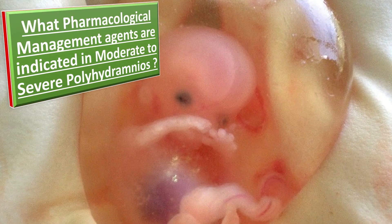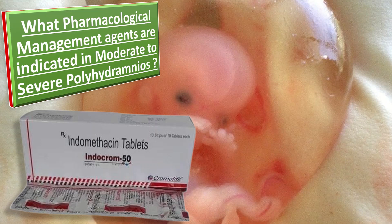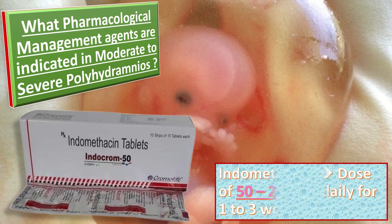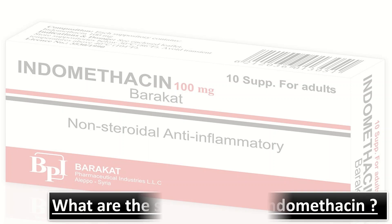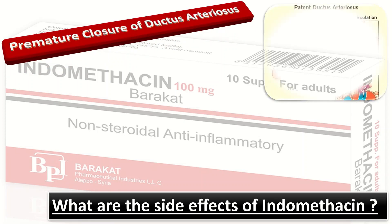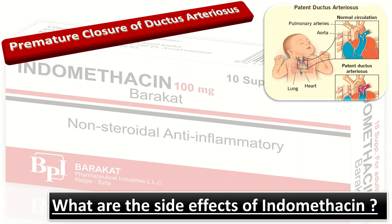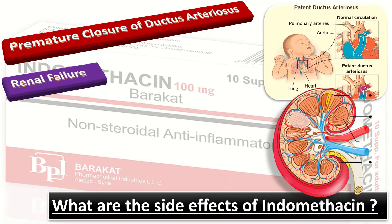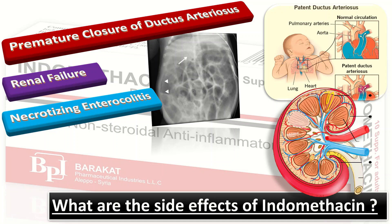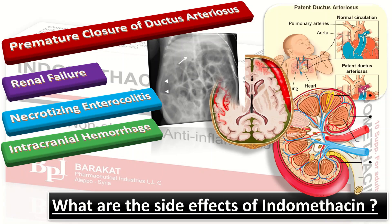What pharmacological management is indicated in moderate to severe polyhydramnios? We use indomethacin, a prostaglandin synthetase inhibitor (an NSAID). Indomethacin is indicated in a dose of 50 to 200 mg daily for 1 to 3 weeks. The side effects of indomethacin include: premature closure of the ductus arteriosus, renal failure, necrotizing enterocolitis, and risks of intracranial hemorrhage and cerebral vasoconstriction. It is important to inform the patient about all these side effects.